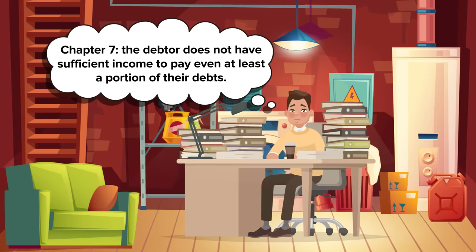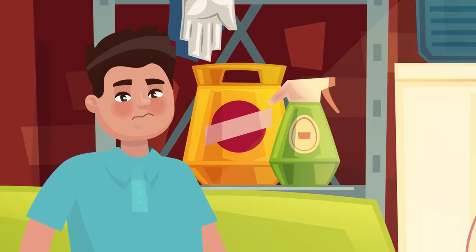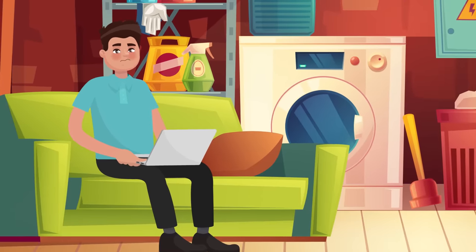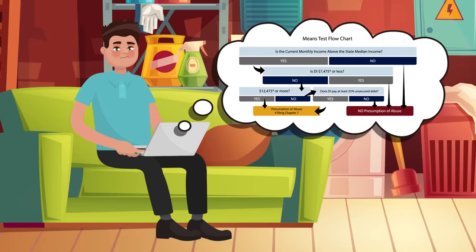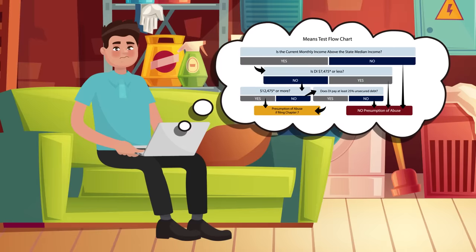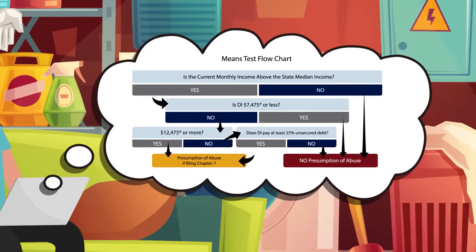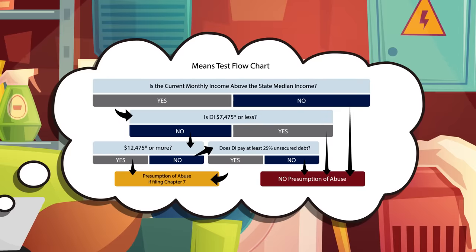An important requirement for a Chapter 7 bankruptcy is that the debtor does not have sufficient income to pay even at least a portion of their debts. If the debtor has enough income, they must file under Chapter 13 bankruptcy. The decision of which type of personal bankruptcy to file — Chapter 7 or Chapter 13 — is determined through the bankruptcy means test, which calculates the debtor's income, expenses, and debts to see if any repayment is possible.